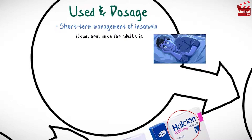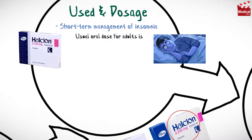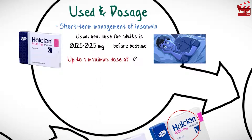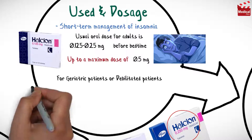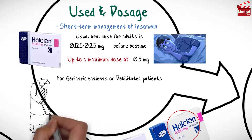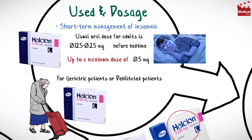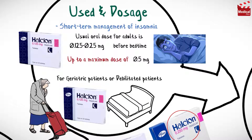The usual dose for adults is 125 micrograms to 250 micrograms before bedtime, up to a maximum dose of 500 micrograms. The usual dose for geriatric or debilitated patients is 125 micrograms at bedtime.